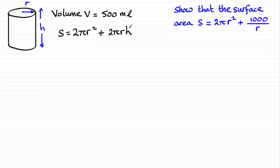Now you'll notice that we have h in our surface area expression, but the target equation doesn't have an h in it. So what we need to do is get h in terms of r, and we can easily do that by turning our attention to the volume.